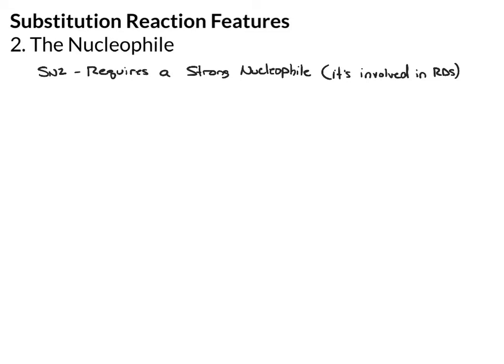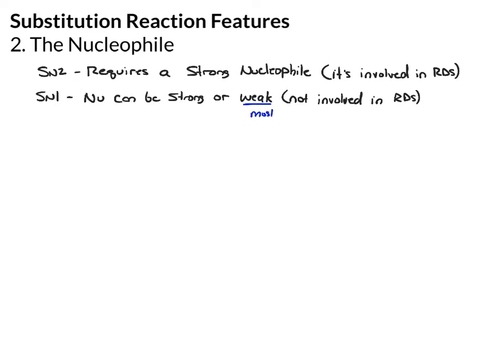For the SN1, on the other hand, you need a nucleophile, but it can be strong or weak — it doesn't matter because it's not involved in the rate-determining step. In general, for SN1, weak nucleophiles are the most common because those tend to lead to SN1 reactions, where strong nucleophiles are reserved for SN2 reactions.